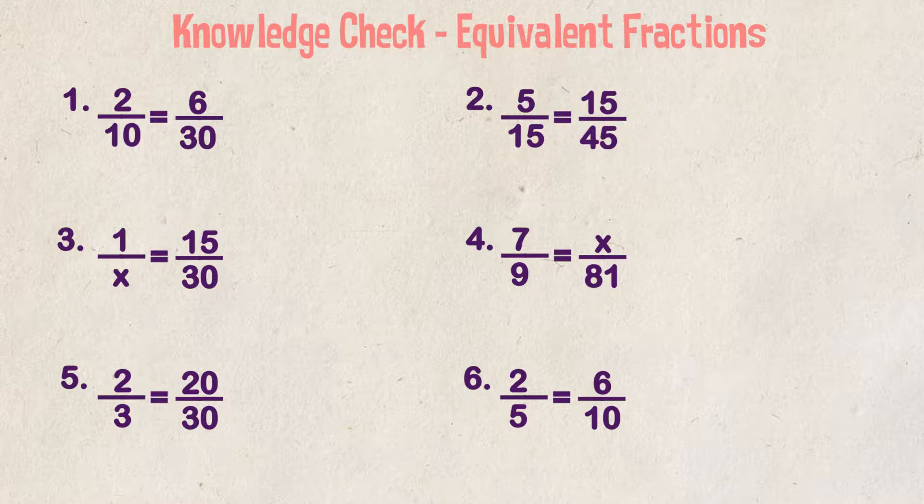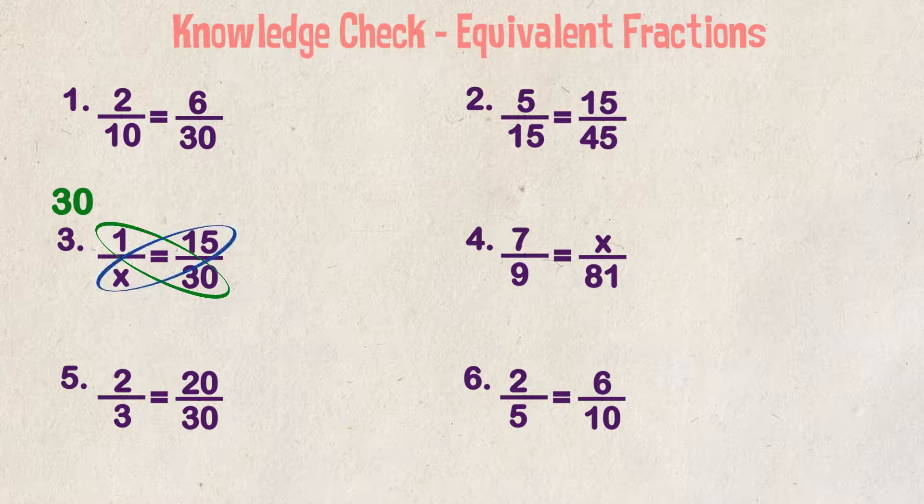Example three, 1 over x is equal to 15 over 30. This one may be easier to solve by looking at cross multiplication. If we look at 1 times 30, we get 30. What number times 15 equals 30? 2. So our equivalent fraction is 1 half. And that makes sense, right? Because 15 is half of 30.